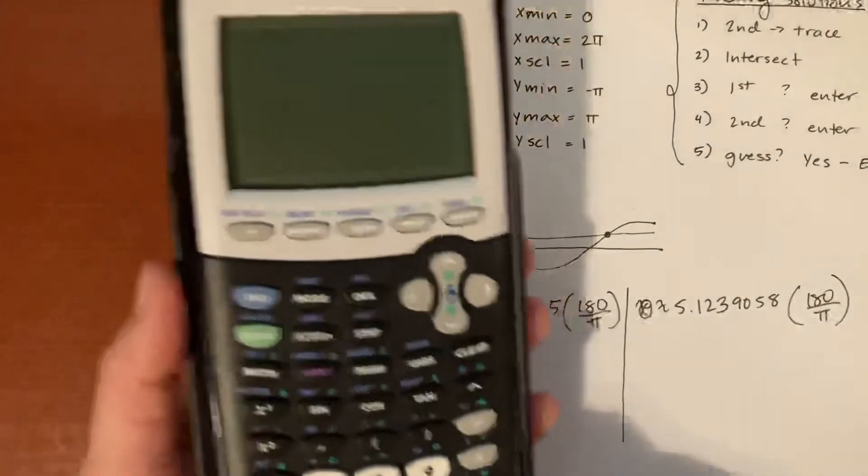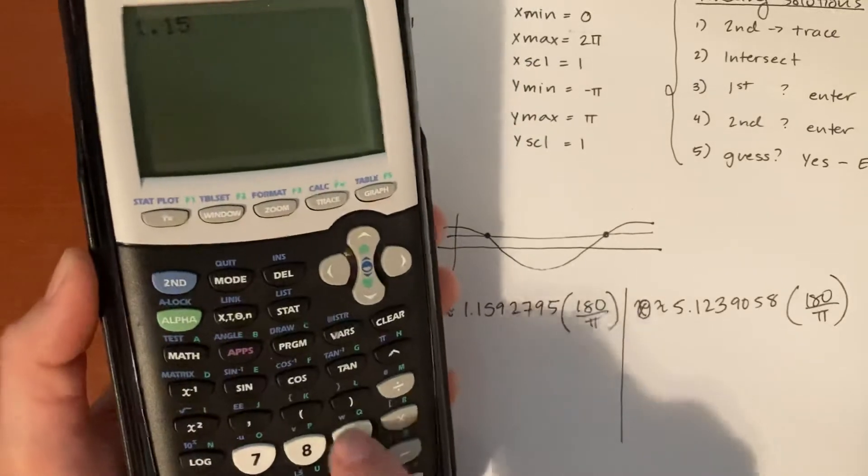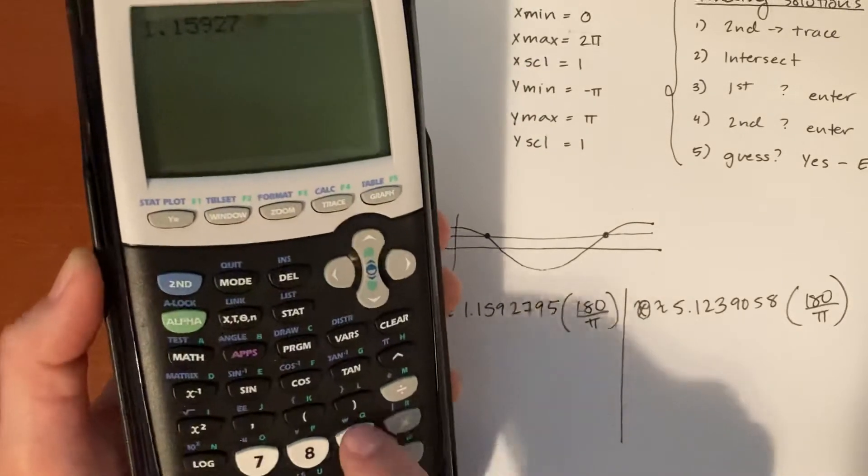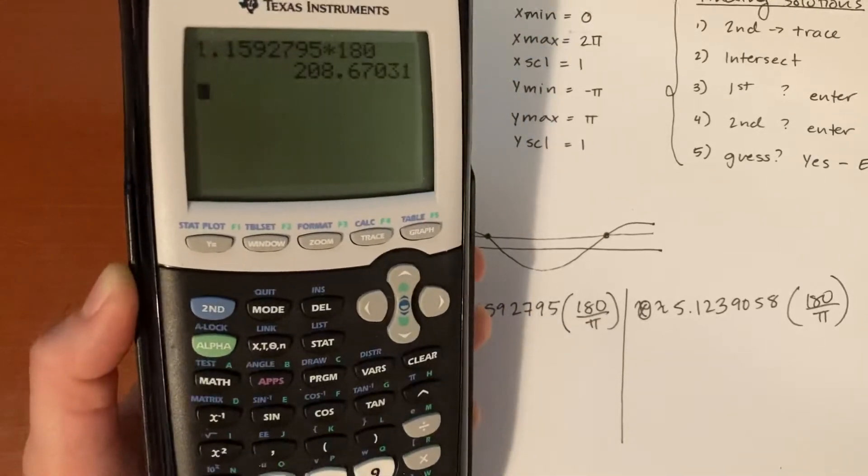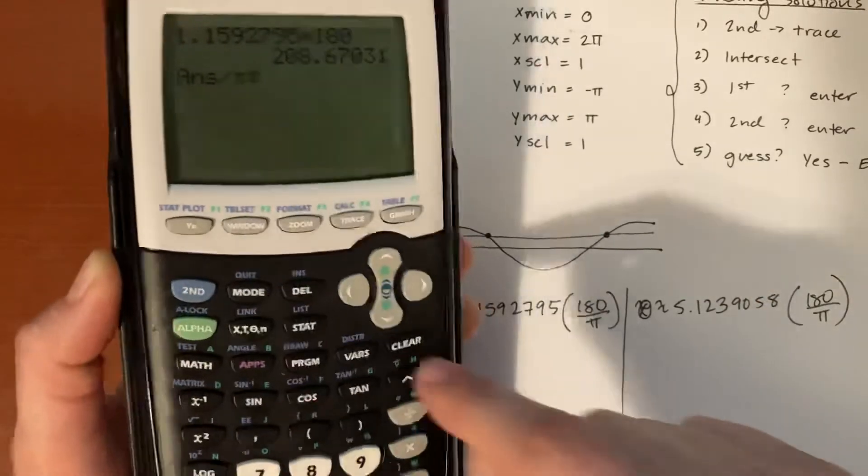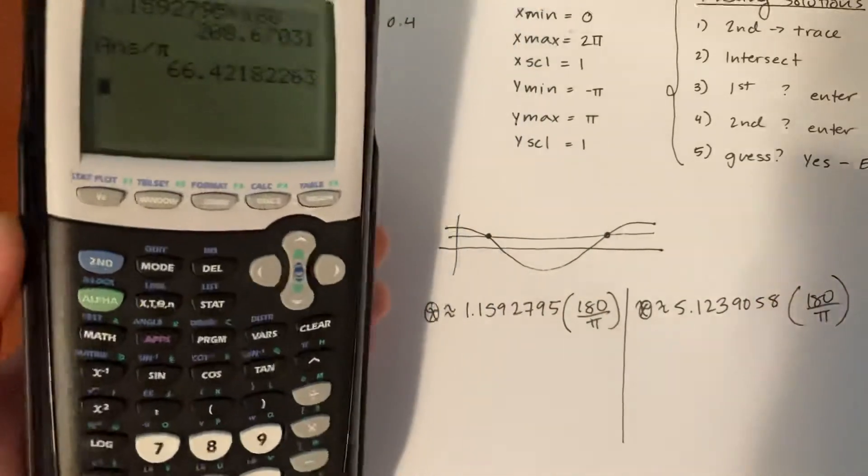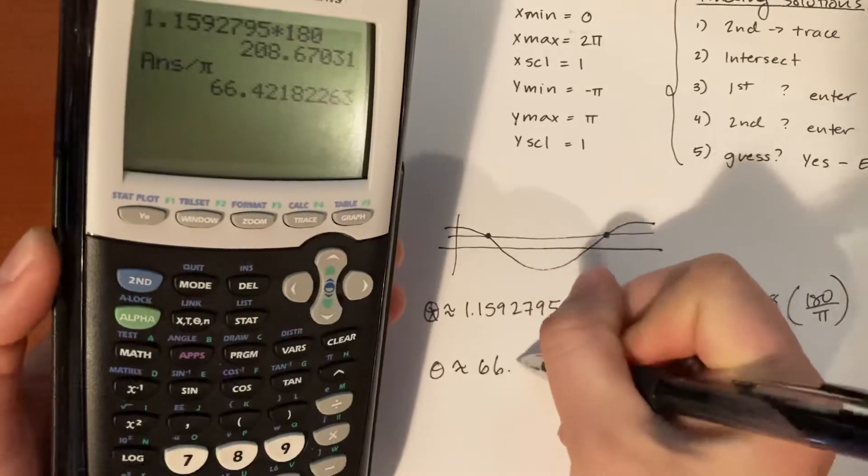So let's go ahead and do that. We'll do the 1.1592795 times 180, that's 208.67031, then we'll divide that by pi, so second pi. And we get the answer I had in the video, which is theta is approximately 66.42.